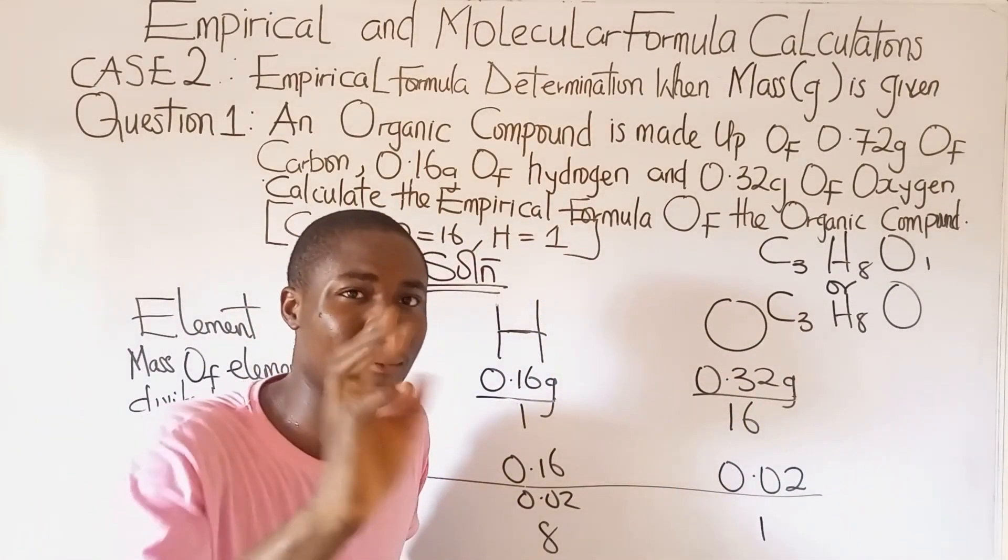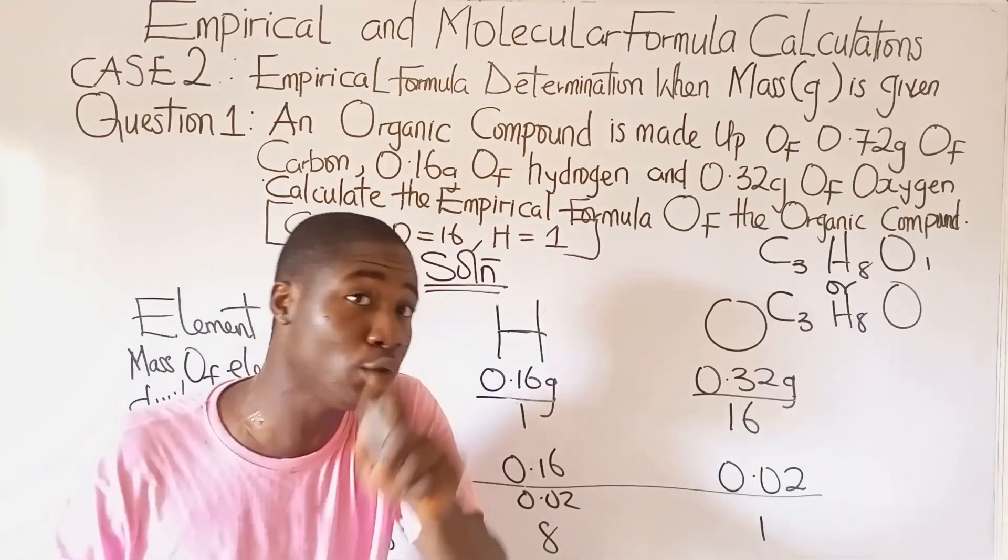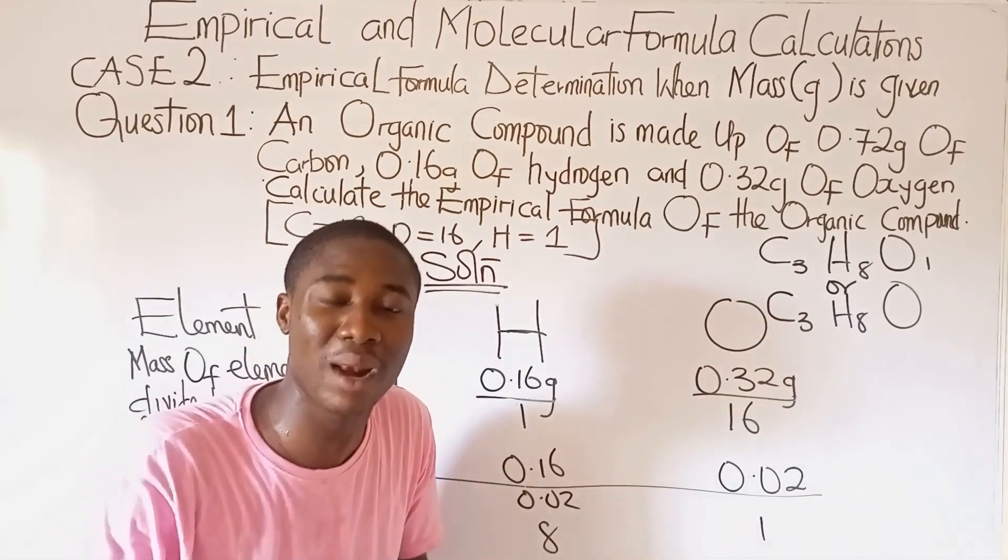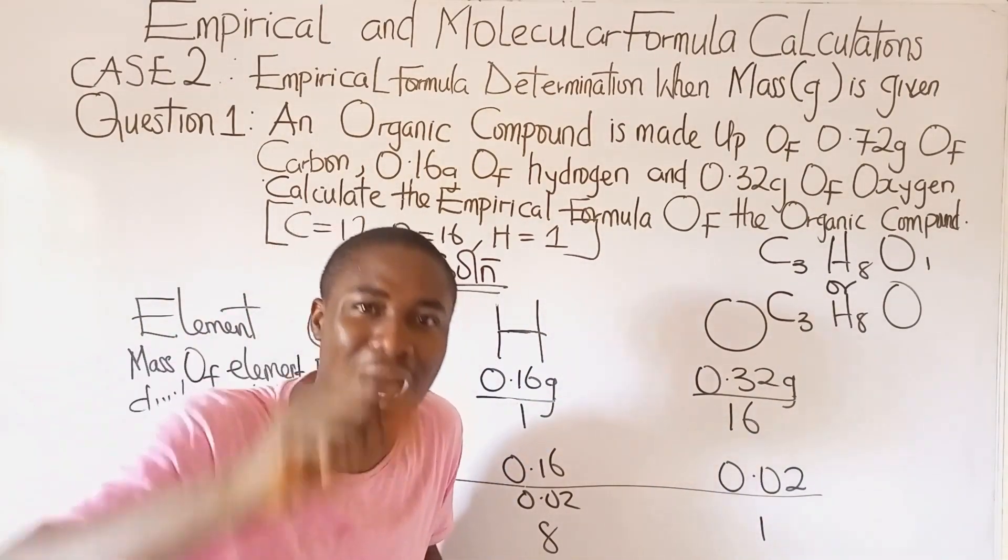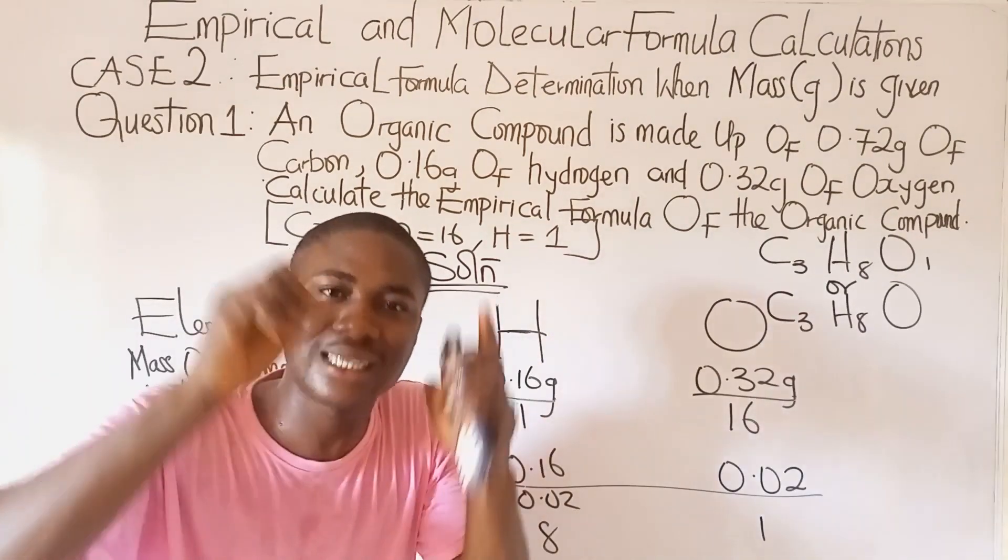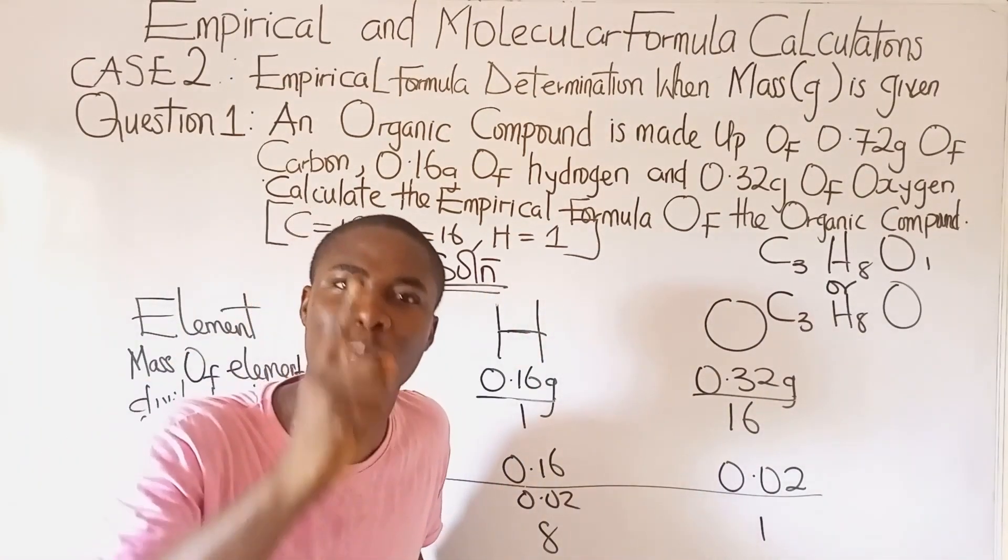Because remember, when in the first video lesson, I told you all that empirical formula is the simplest formula of the compound. So it is the simplest way that particular compound can exist.